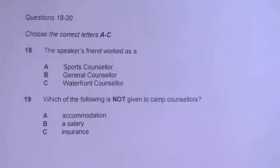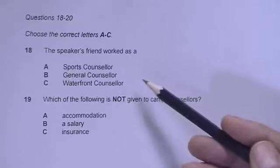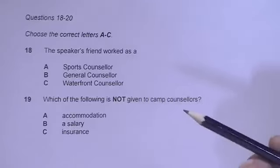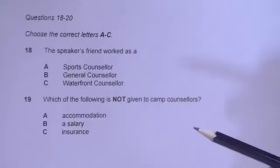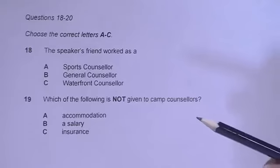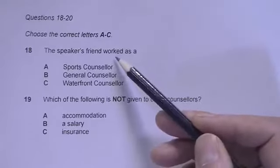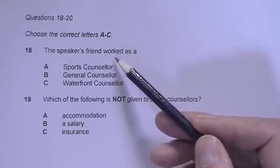So, you've probably done lots of multiple choice questions before, but are you doing them efficiently? Here are some tips for how to do this task. The first thing you should do is read the instructions carefully to see how many answers you need to find. In this example, we need to find one answer. You'll have some time to read the questions first before you listen. Look at the question stem — that's this part here — and underline key words, like this.